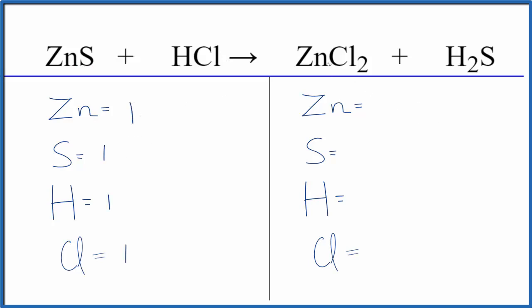On the product side we have the one zinc, we have one sulfur atom, two hydrogens, and two chlorine atoms.